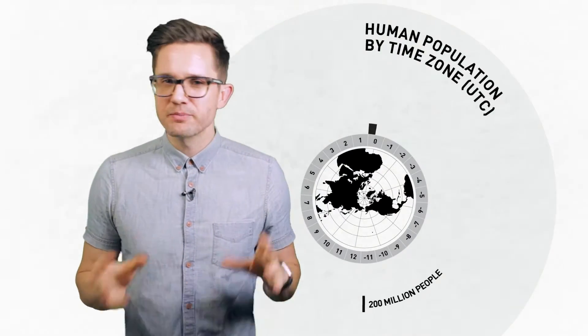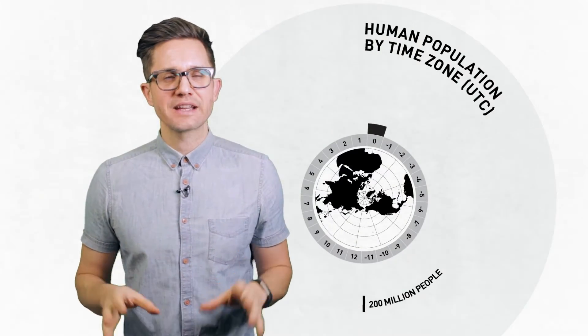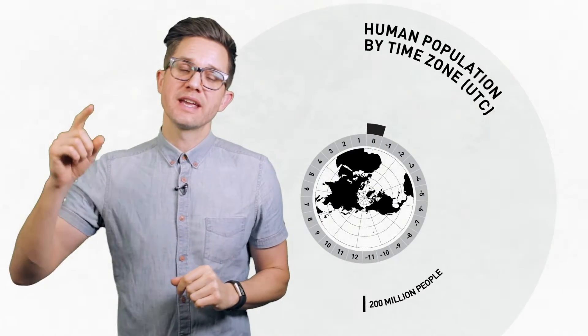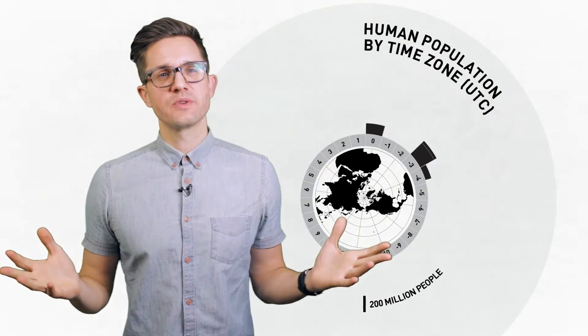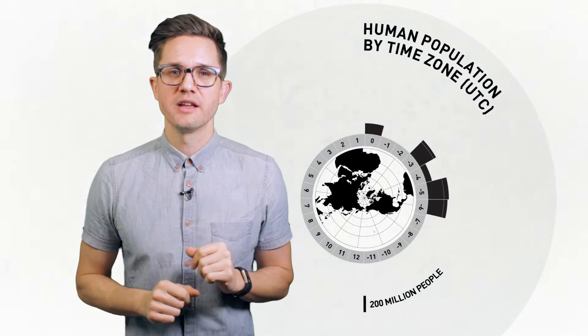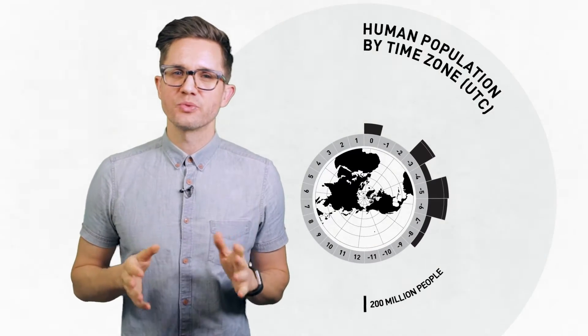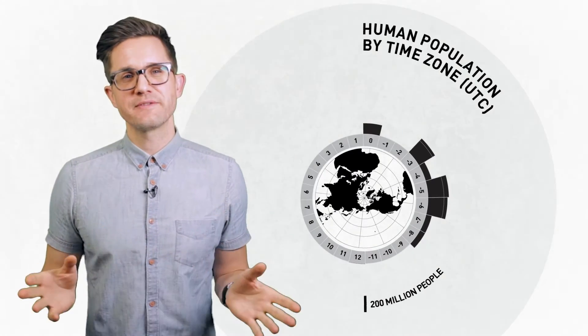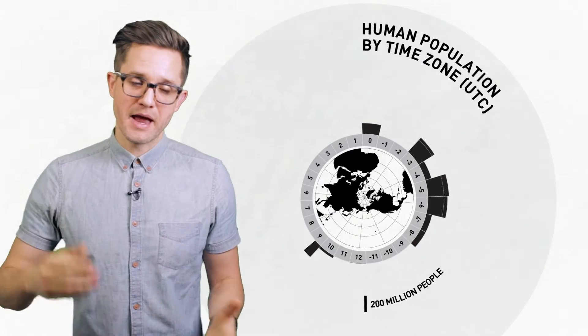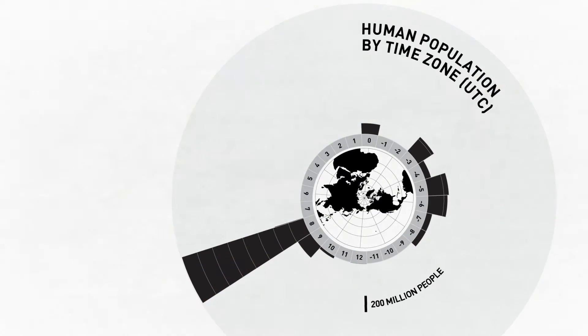Let's start at UTC 0 and start working our way westward. We have some population there, but as we hit the Atlantic, not much is going on. Until we hit the Americas, then all of a sudden we've got quite a bit of population to look at. The prairie region, not as much, the west coast, then we hit the Pacific, not much going on there. And then, boom, population explosion.